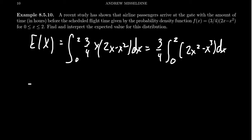Finding the antiderivative here, 3 fourths, we get 2 thirds x cubed minus x to the 4th over 4 as we go from 0 to 2.